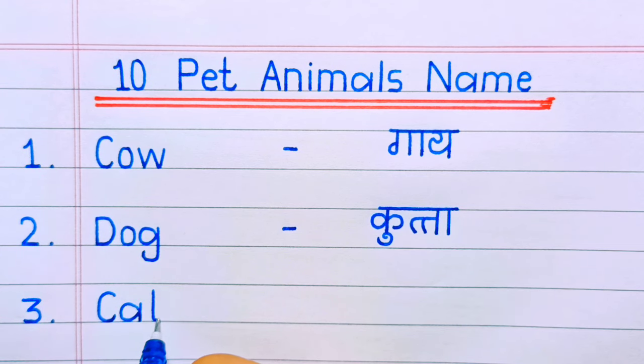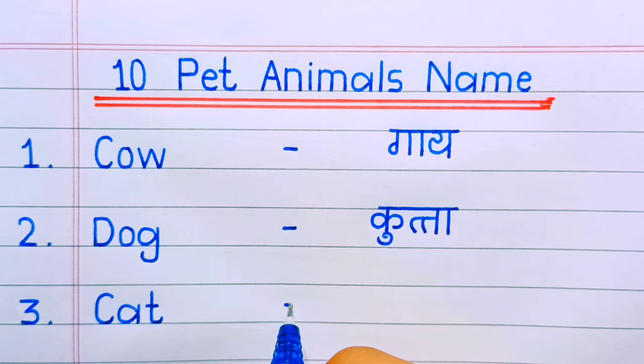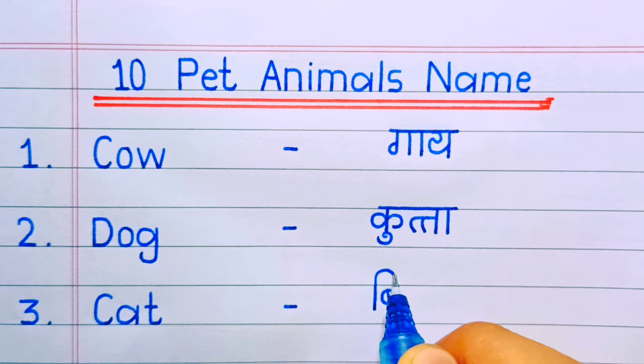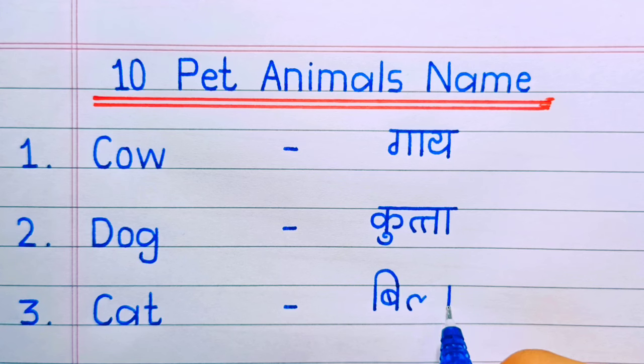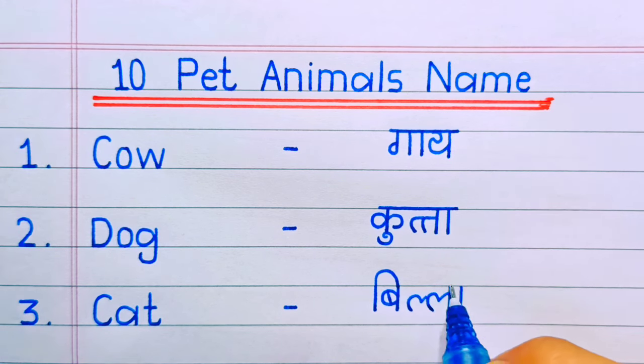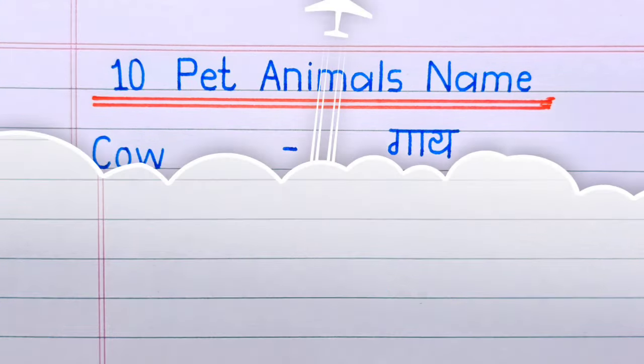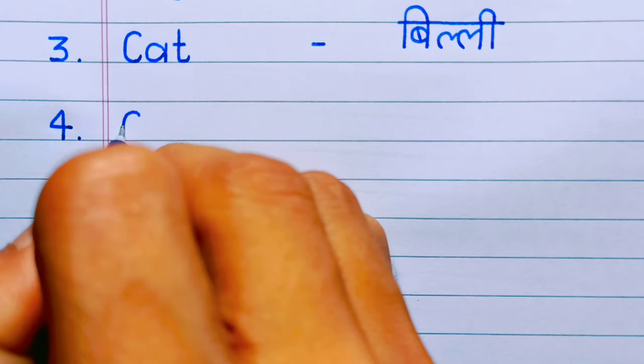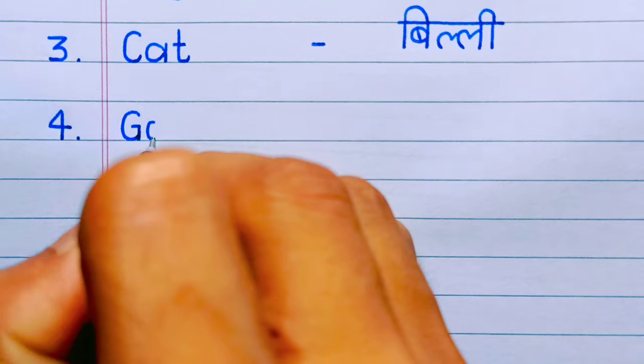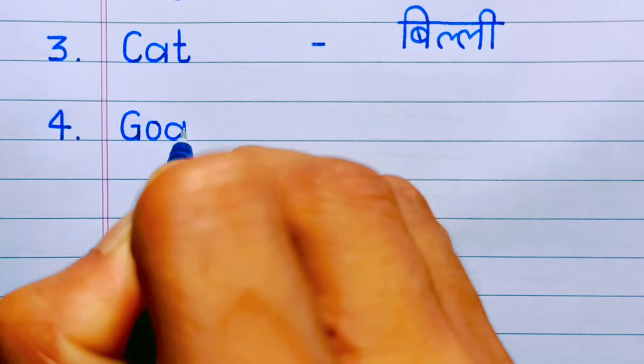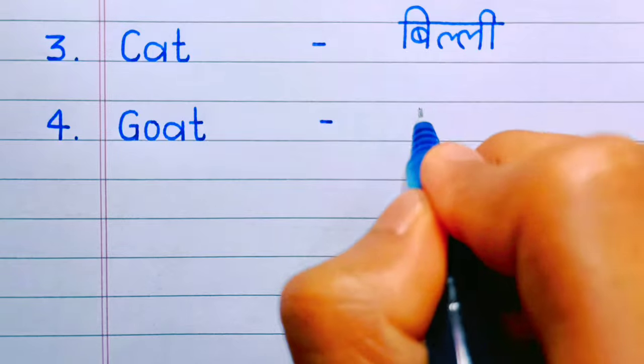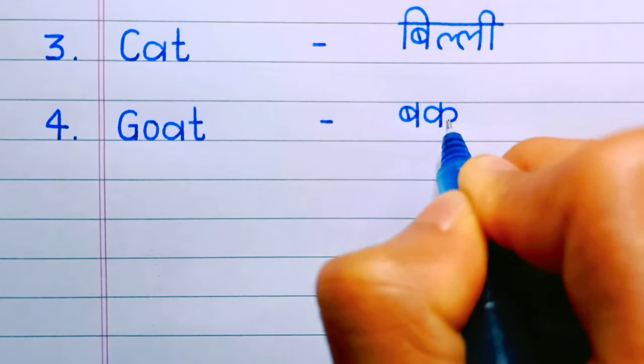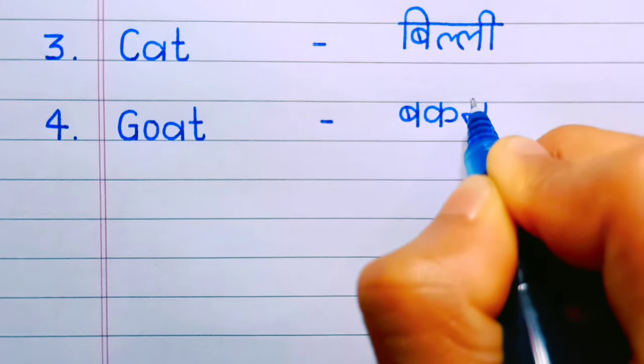Number three: cat. Cat means billi. Number four: goat. Goat means bakri.